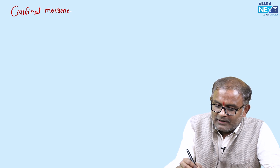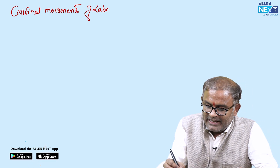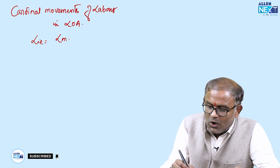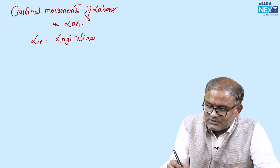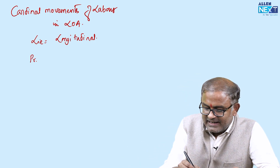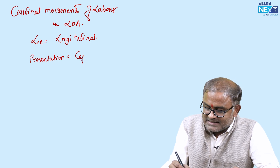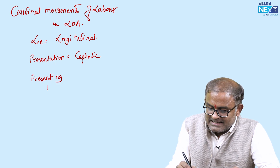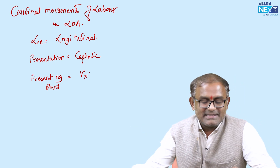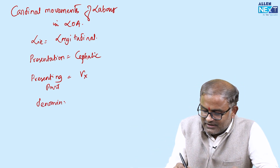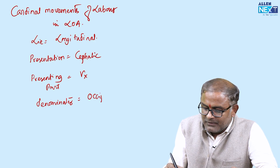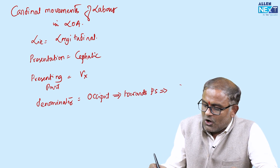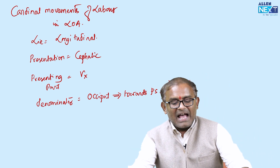Cardinal movements of labour in left occipitoanterior. The lie is longitudinal, presentation is cephalic, presenting part is vertex, and the denominator is the occiput. This occiput is towards the pubic symphysis, which is why it is left occipitoanterior.